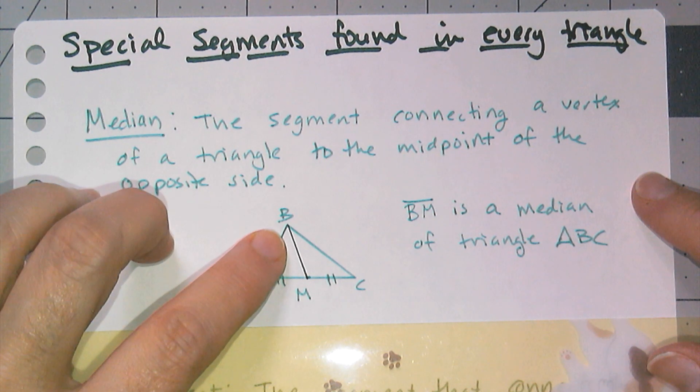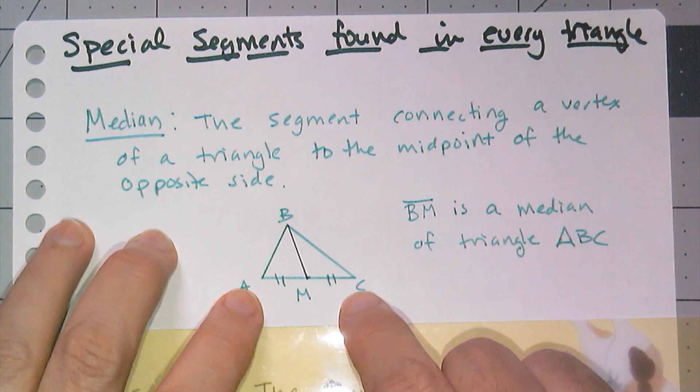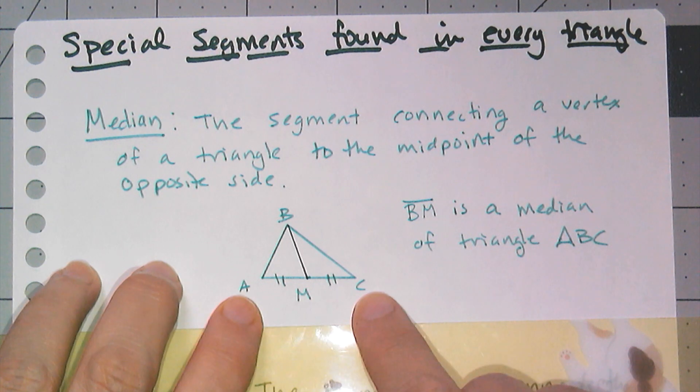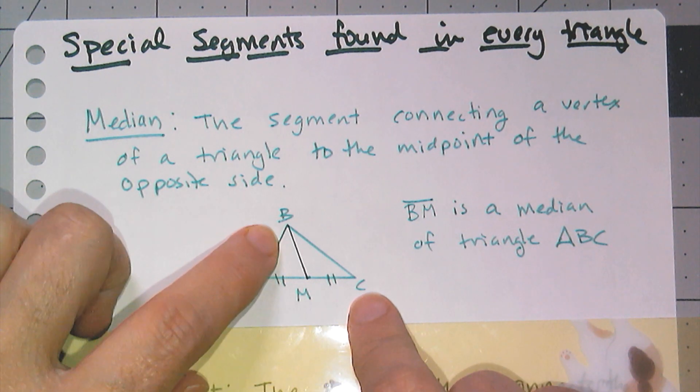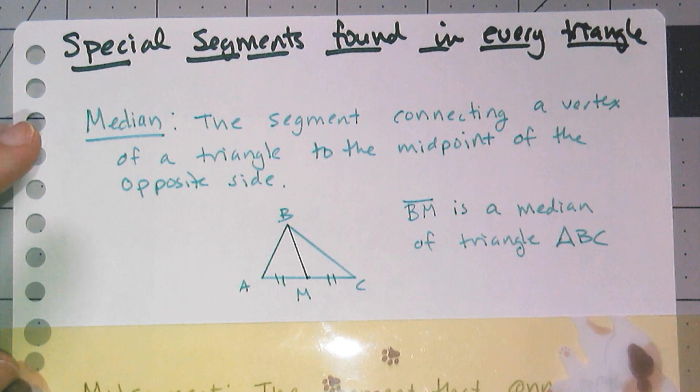So if B is the vertex I choose and AC is the side opposite and M is the midpoint of line segment AC, then BM, that line segment, is a median of triangle ABC. And of course there are three vertices which means there are three medians.